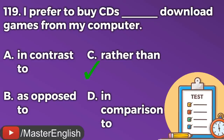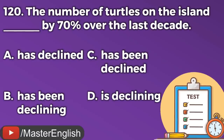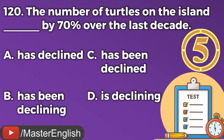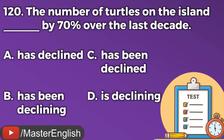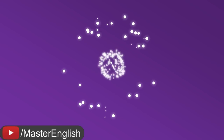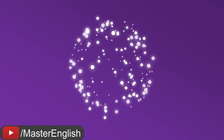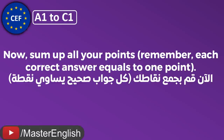Question number one hundred and nineteen. I prefer to buy CDs ___ download games from my computer. A: In contrast. B: As opposed to. C: Rather than. D: In comparison to. The correct answer is C: Rather than. I prefer to buy CDs rather than download games from my computer. Question number one hundred and twenty. The number of turtles on the island ___ by 70% over the last decade. A: Has declined. B: Has been declining. C: Has been declined. D: Is declining. The correct answer is A: Has declined. The number of turtles on the island has declined by 70% over the last decade.